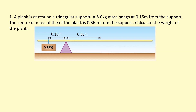In this question, we have a plank which is at rest on a triangular support. A 5.0 kilogram mass hangs at 0.15 meters, and the central mass of the plank is at 0.36 meters from the support — that's where the center of mass is, so that's where the weight of the plank acts through. The clockwise moments are going to have to balance the anticlockwise moments.